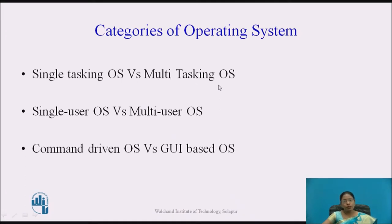Multitasking OS — the best example is Windows. When using the Windows operating system, I am performing multiple tasks: I have connected to the internet, I am using file sharing, maybe I am working on Excel. So I am doing multiple tasks on that OS — that is the multitasking OS, and the example is Windows.